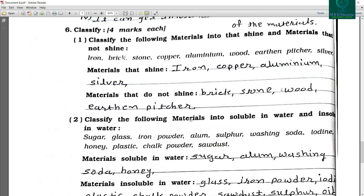Now the classification. Classify the following materials into that shine and materials that not shine. So materials that shine: iron, copper, aluminum and silver. Materials that don't shine: brick, stone, wood, earthen pitchers.